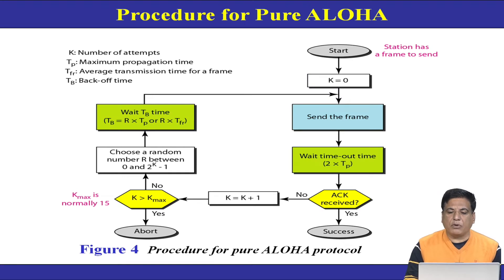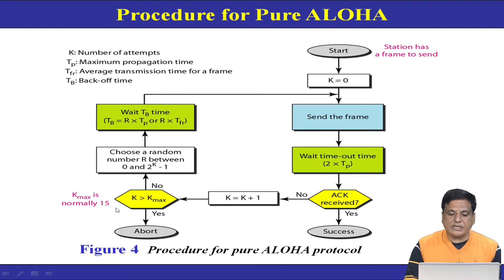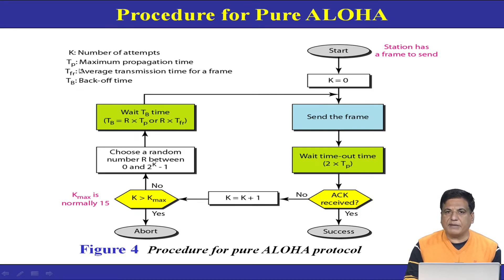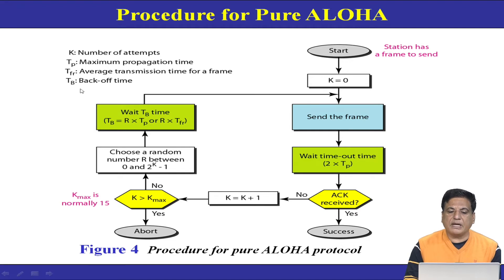The procedure adopted in Pure ALOHA is as follows. If a station has a frame to send, we use a counter k, where k refers to the number of attempts a sender makes for sending frames, starting at k=0. We also have a variable k_max, the maximum number of attempts a station will perform to send the frame. Another variable is tp, the maximum propagation time — the worst-case time a frame takes from the first station to the last station. tfr is the average transmission time for a frame, and tb is the backoff time.